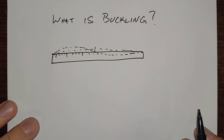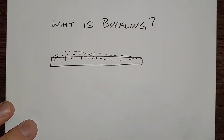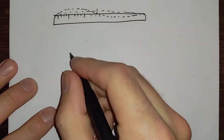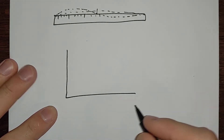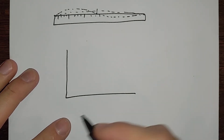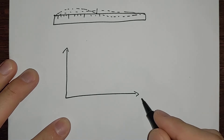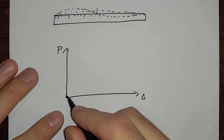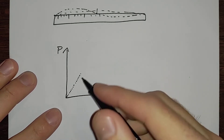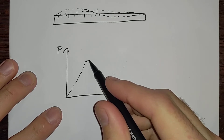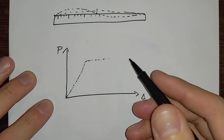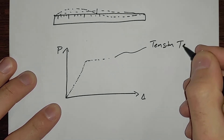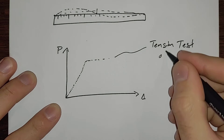Buckling is another kind of failure that we need to avoid in structural, mechanical, any sort of engineering where we're dealing with physical materials. Because what we get is, instead of a nice, predictable load-displacement curve where we're gradually loading up and then we hit some yield, we get something different.